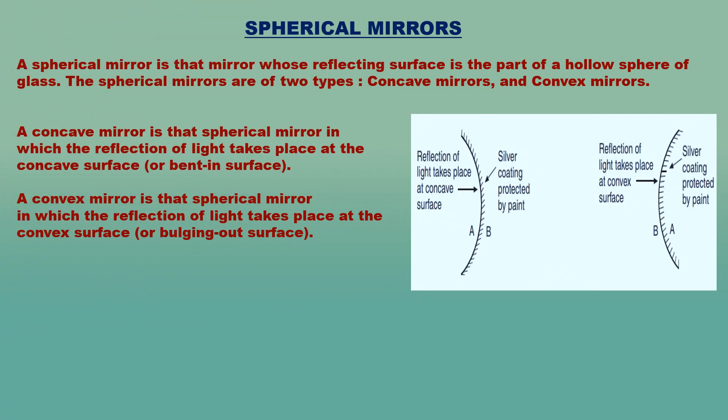Spherical mirrors: A spherical mirror is a mirror whose reflecting surface is part of a hollow sphere of glass. Spherical mirrors are of two types: concave mirrors and convex mirrors. A concave mirror is one in which reflection of light takes place at the concave or bent-in surface. A convex mirror is one in which reflection of light takes place at the convex or bulging-out surface.